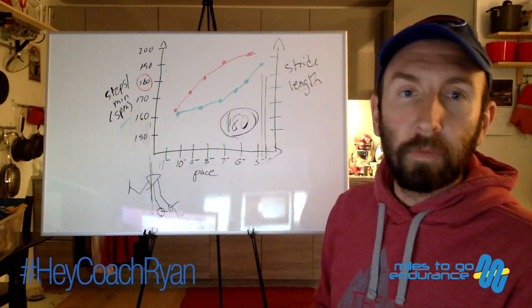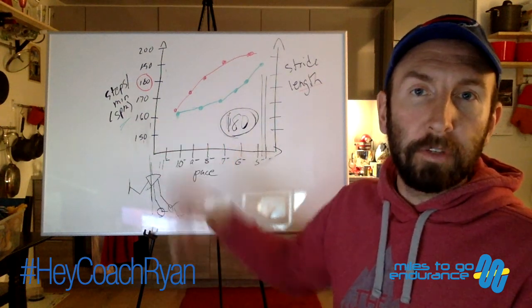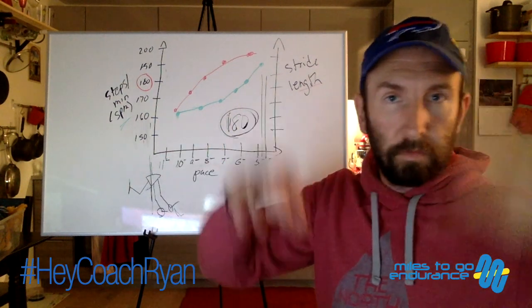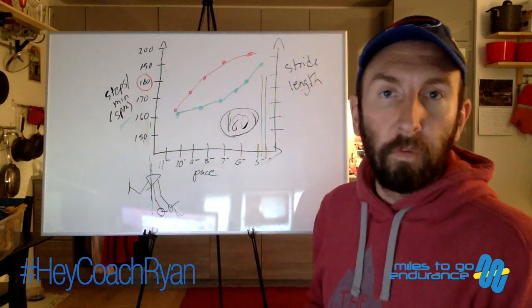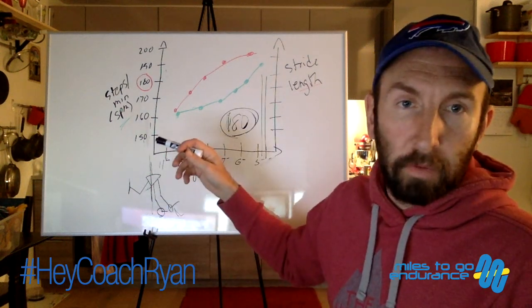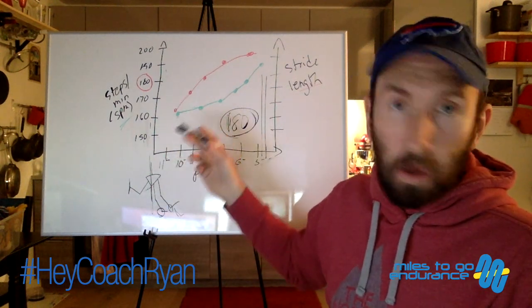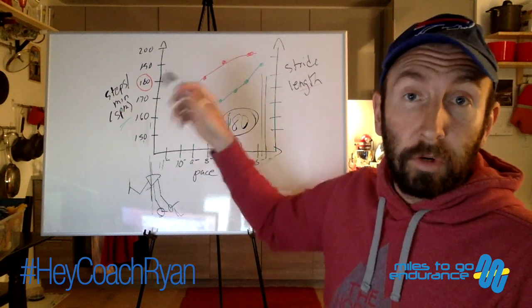So what is running cadence? Cadence is simply measured in the amount of steps you take per minute. One, two, three, four. Those added up over one minute gives you a number. It could be 150, it could be 170, whatever you want. That is your running cadence.